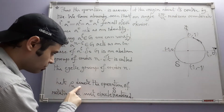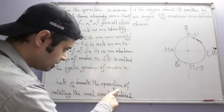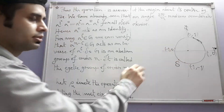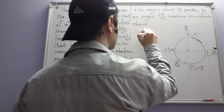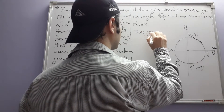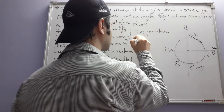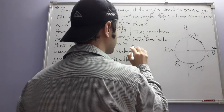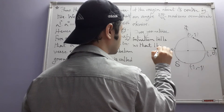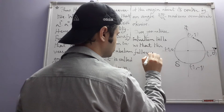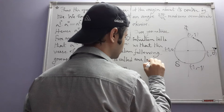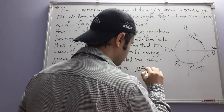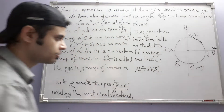Let ρₙ denote the operation of rotating the unit circle S centered at the origin about its center by an angle of 2π/n radians counterclockwise. Our geometric intuition tells us that the following are true. First, ρₙ is a bijection on S.